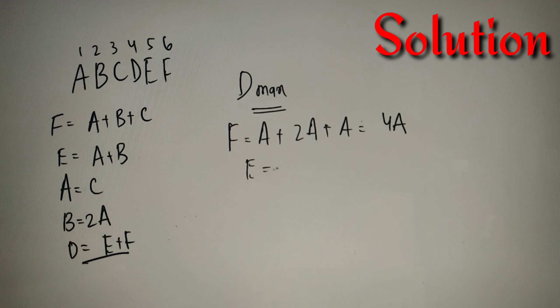Now same for E: E equals A plus B which equals 2A. So E equals 3A. Now we can simply say that D equals E plus F, that is 4A plus 3A, which equals 7A.